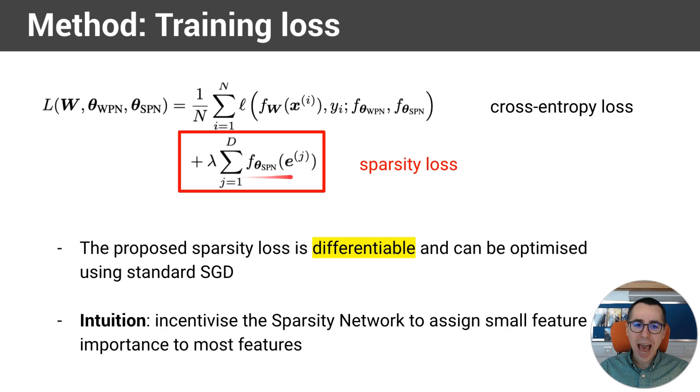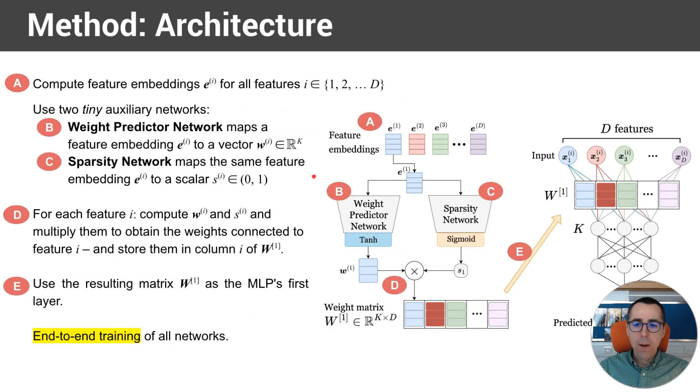The sparsity network, the scalar that it outputs, can be interpreted as a feature importance. So if the number is 0, the feature is not important. If the output is 1, then the feature is very important. By having this number 0, for example, the weights get multiplied by 0, which means that they become 0, which implies that all the connections to a feature are 0, and implicitly this is equivalent to dropping this feature. So by having 0 feature importances, we drop features. And by having feature importances equal to 1, we preserve the feature. Now, the sparsity loss simply adds a summation of all those feature importances across all feature embeddings.